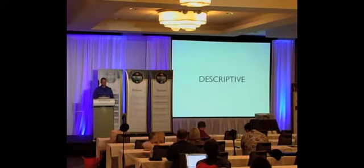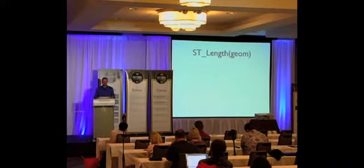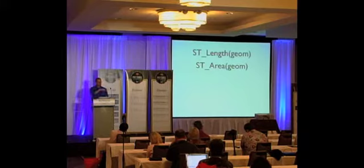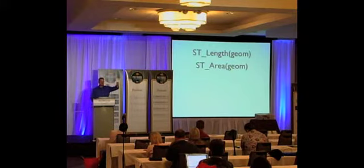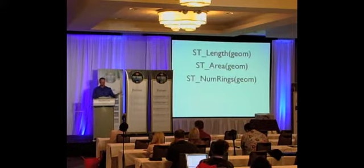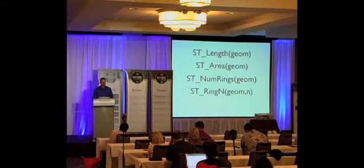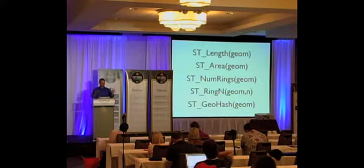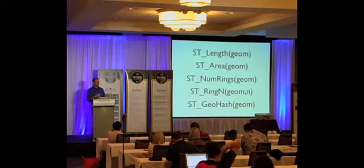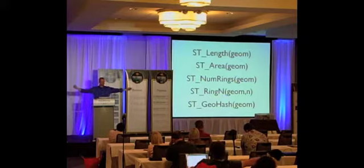Descriptive functions let you characterize a single geometry object. Given a geometry, you could measure it — get its length or area. Or you could look inside complex objects: polygons consist of an outer ring and interior rings representing holes, so you might ask how many rings does a polygon have, or retrieve a specific interior ring. Or you could run a function like GeoHash, which given a geometry, strips it down to a string key that tells you roughly where it is. These simple descriptive functions all work on one geometry at a time — answering questions like how big is Yosemite Park, or how long is the Golden Gate Bridge.